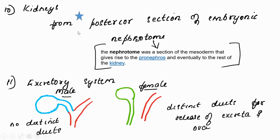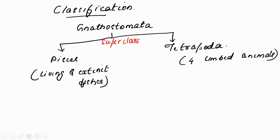In Gnathostomata the kidney is developed from the posterior section of the embryonic nephrotome. The excretory system differs with respect to male and female: in the male there is no separate distinct duct for releasing excreta — only one opening; but in the female, separate duct openings are present for releasing excreta and sex cells (ova).